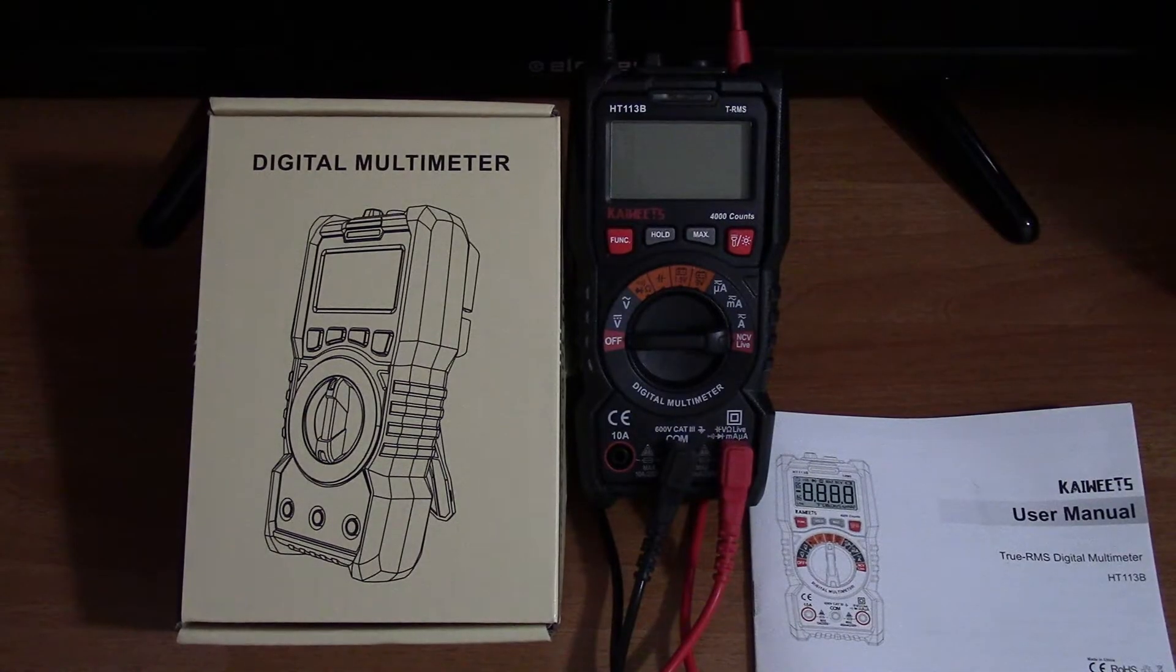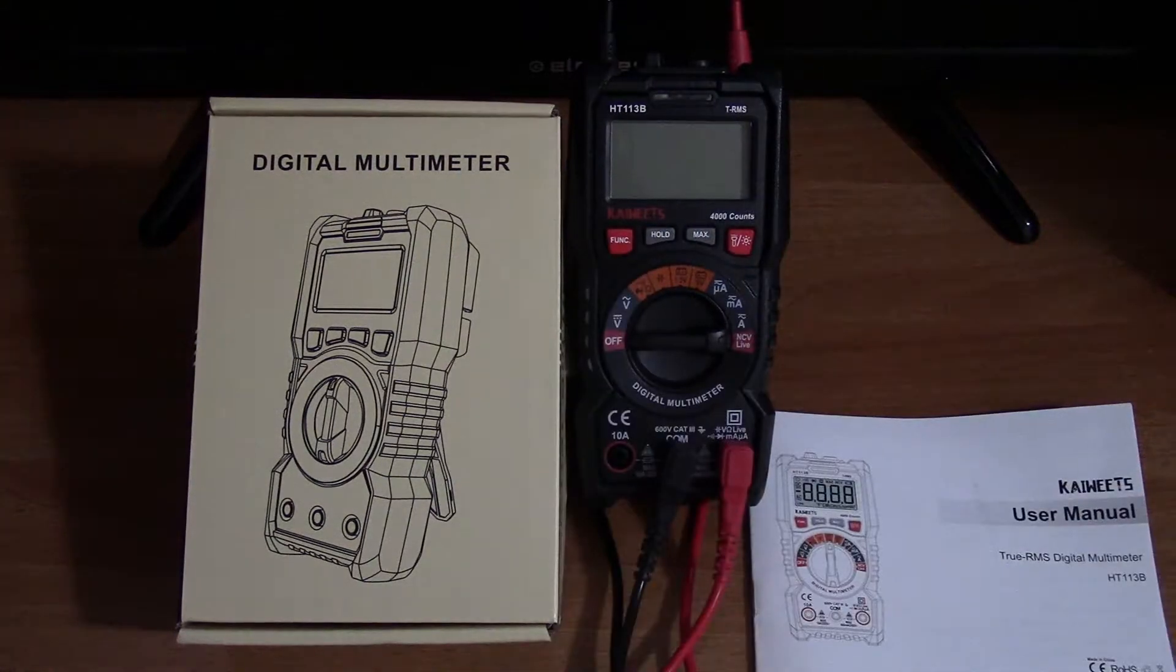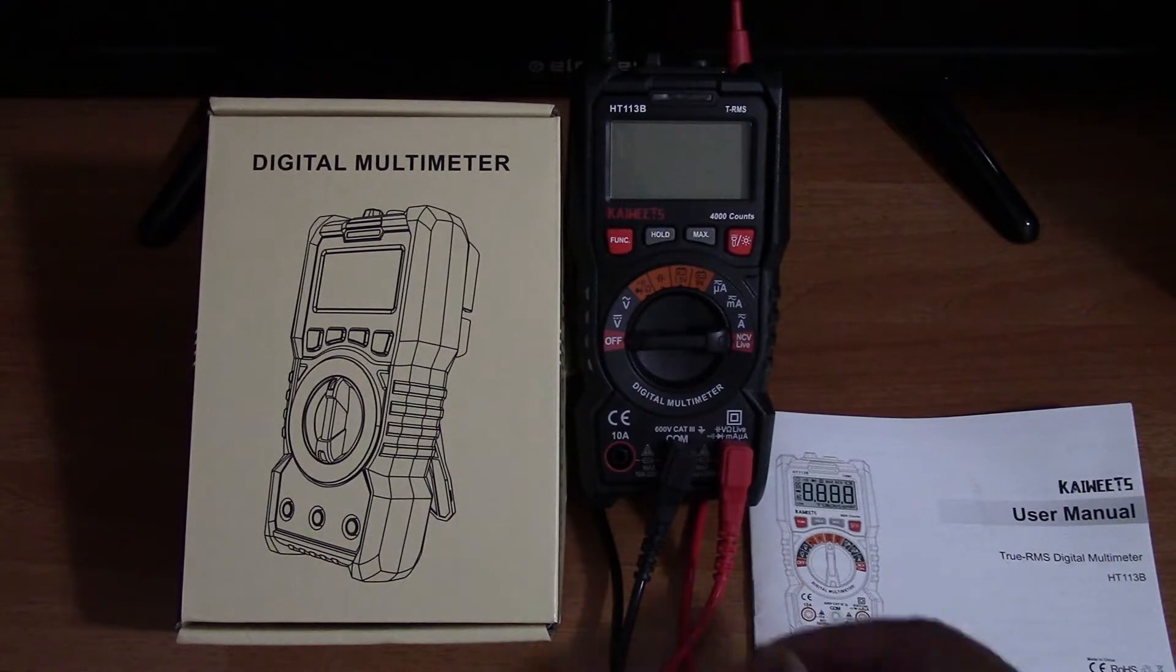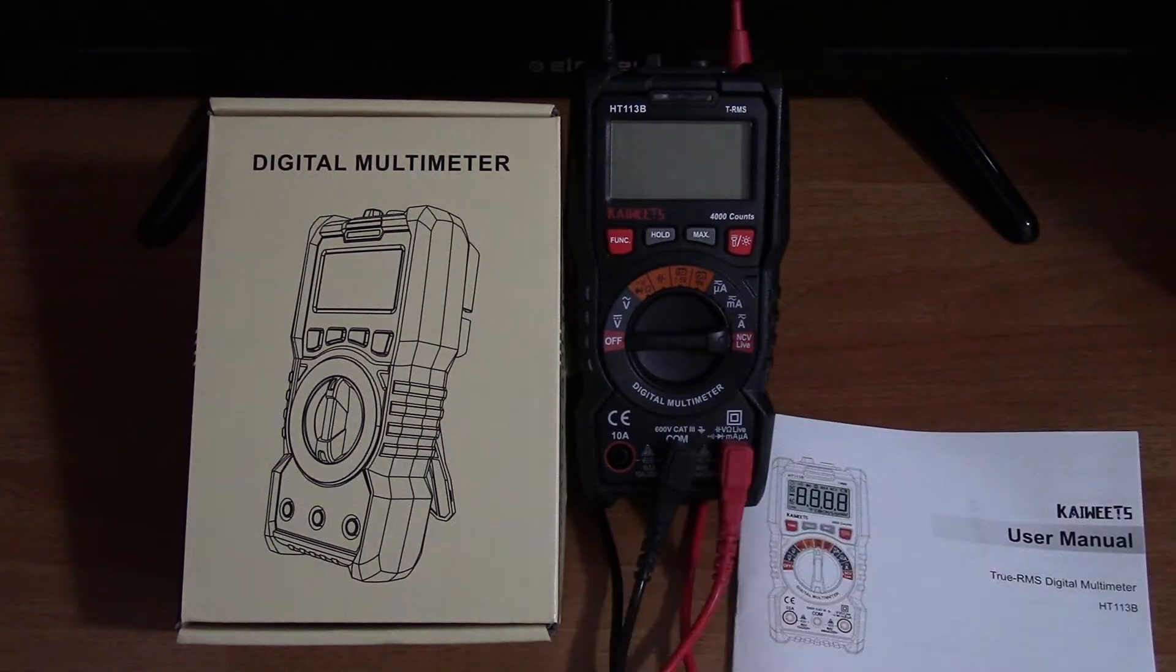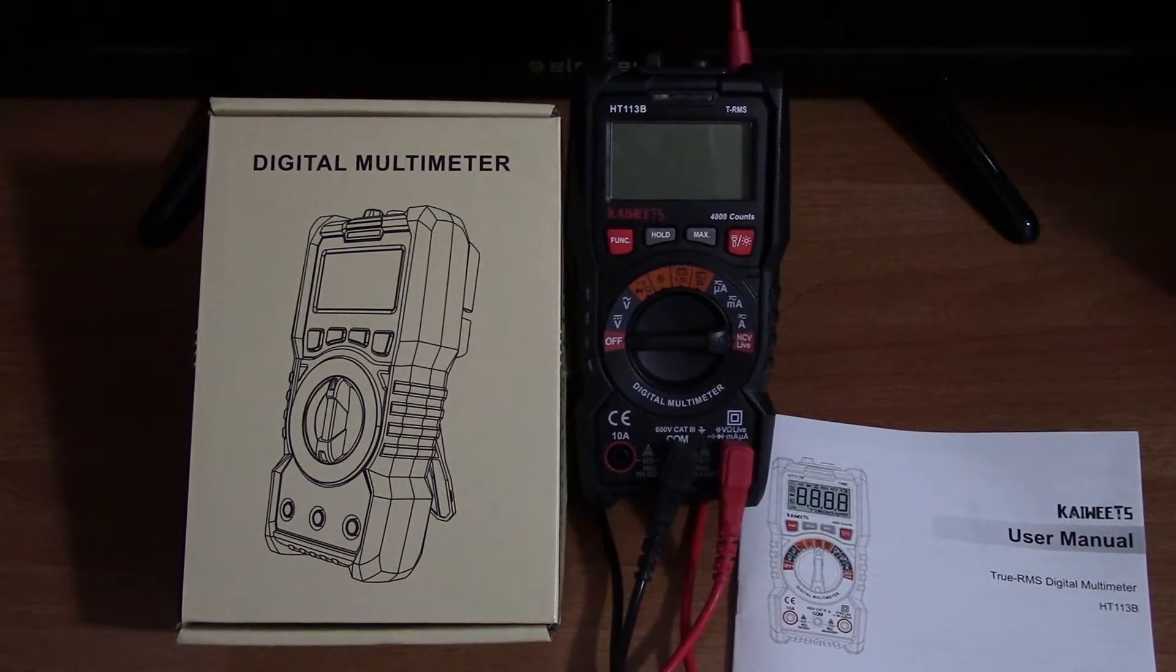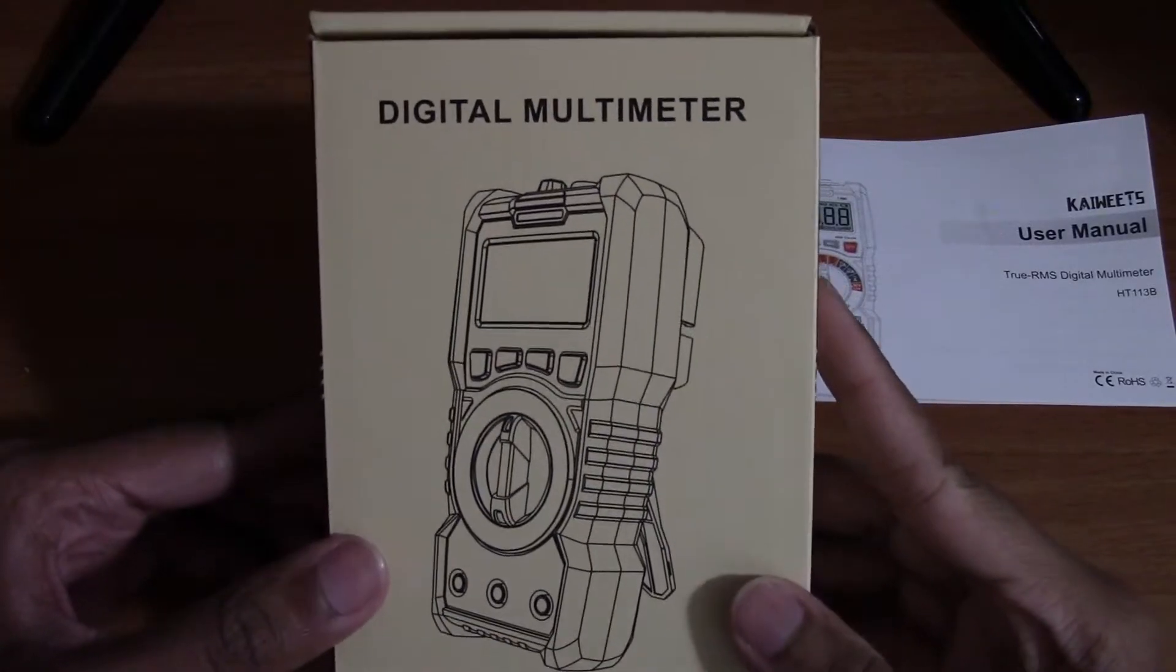Hello everyone, today we will be reviewing this digital multimeter by Kaiweetz from Amazon. This multimeter is auto-range and comes with the box, manual, and two tester probes. The box just says it's a digital multimeter.